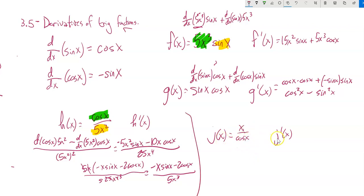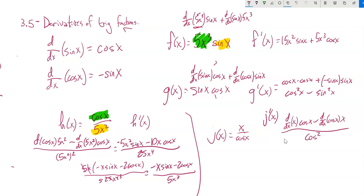Do we have x over cosine x? What's its derivative? Again, we have a quotient. Derivative of the numerator times the denominator, minus derivative of the denominator times the numerator, all over the denominator squared. The derivative of x is 1, and the derivative of cosine is negative sine. So this gives cosine x plus x·sine x, all over cosine squared x. I can't simplify anything further.